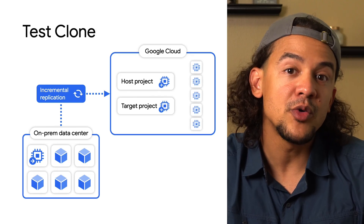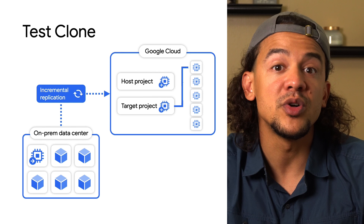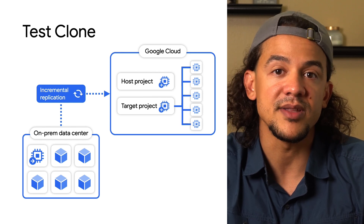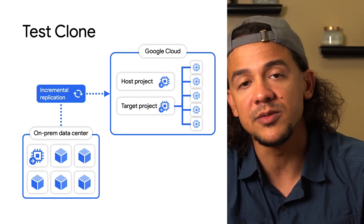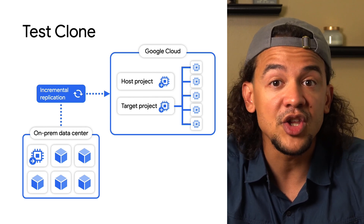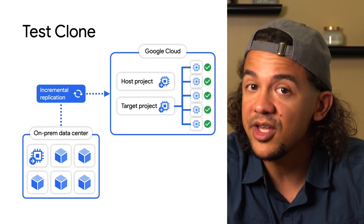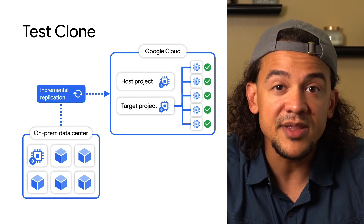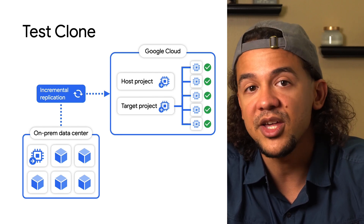After setting your target, on to phase four: the test clone. Here's where you actually clone your source VM to a Compute Engine instance for testing purposes, using the latest replication data available. During this phase, you should perform all the tests and validations that you need for your particular application. The source VM continues to run, as well as the incremental replications. The test clone is optional, but definitely recommended to ensure a smooth phase five, the cutover phase.